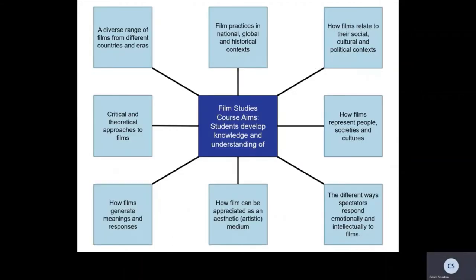The aims of the course are as follows. Over the course of two years, students develop knowledge and understanding of a diverse range of films from different countries and eras. Students learn about film practices in national, global and historical contexts, and how films relate to their social, cultural and political contexts. Students will be taught how films represent people, societies and cultures, about the different ways that spectators respond emotionally and intellectually to films, how film can be appreciated as an aesthetic artistic medium, how films generate meanings and responses, as well as how to apply different critical and theoretical approaches to a variety of films.